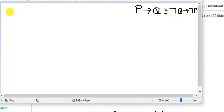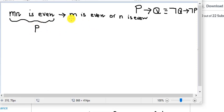Here the problem we have is if M times N is even, then it implies that either M is even or N is even, okay, one of them. So this can be translated into what? This is P and that is, the whole thing is Q, right?